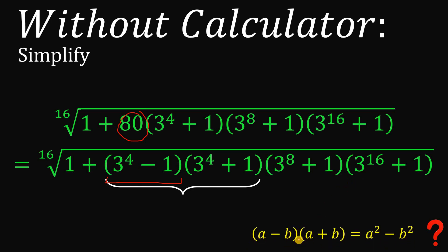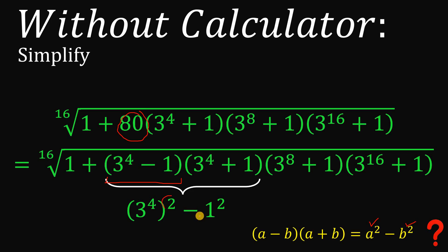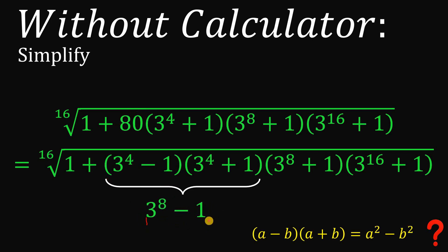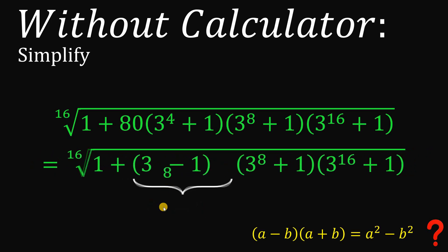Now, (3 raised to the 4th power minus 1) times (3 raised to the 4th power plus 1) can be written as (3 raised to the 4th power) squared minus 1 squared, using the difference of squares identity. If we simplify this, we get 3 raised to the power of 8 minus 1. So we can replace this product with 3 raised to the 8th power minus 1.